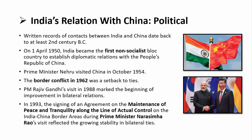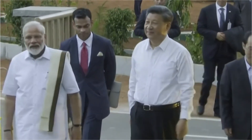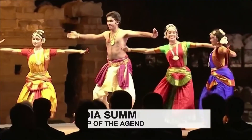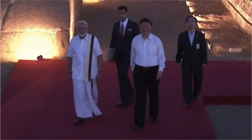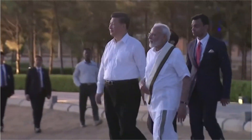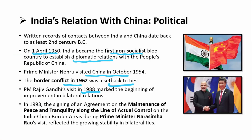India and China have relations going back to ancient times. In 1950, India became the first non-socialist bloc country to establish diplomatic relations with China. PM Nehru visited China in 1954, and relations were good. But in 1962, there was a border conflict which was a setback. Relations improved again after PM Rajiv Gandhi's visit in 1988. In 1993, the signing of the agreement on maintenance of peace and tranquility along the Line of Actual Control during PM Narsimha Rao's visit helped stabilize bilateral ties. The two countries finally agreed on the Line of Actual Control in the Ladakh region.